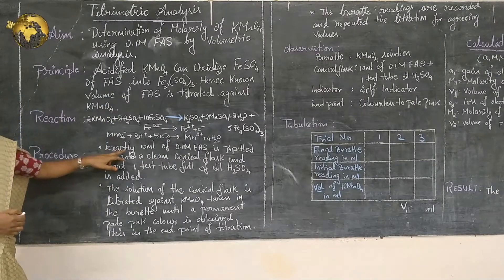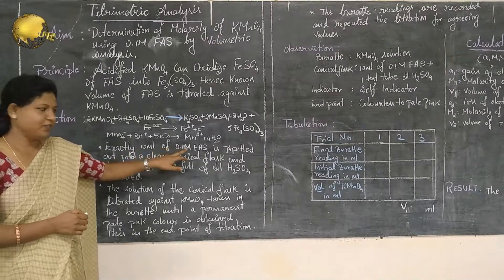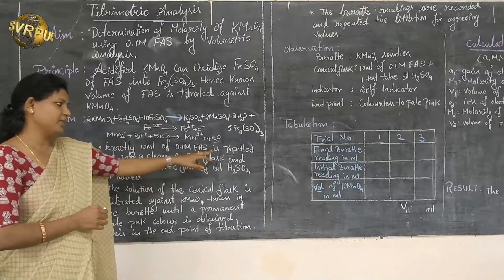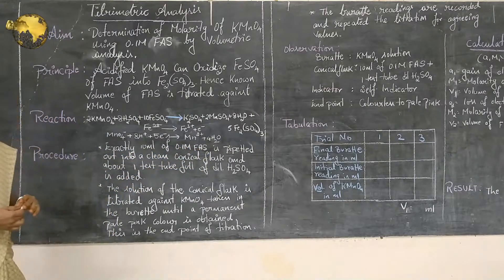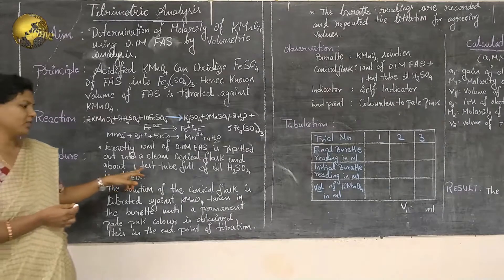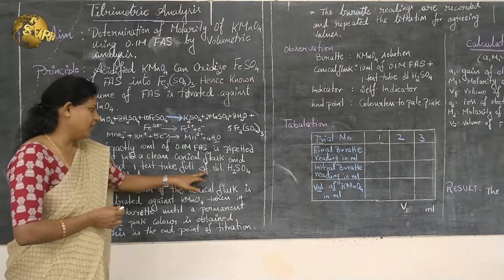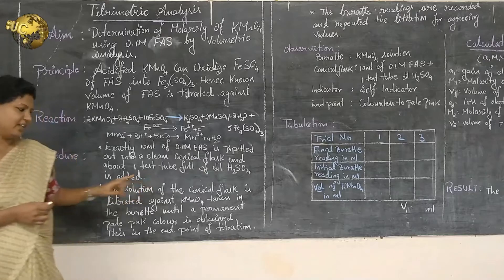Next, the procedure. Exactly 10 ml of 0.1 molar ferrous ammonium sulphate is pipetted into a clean conical flask, and about one test tube full of dilute H₂SO₄ is added.